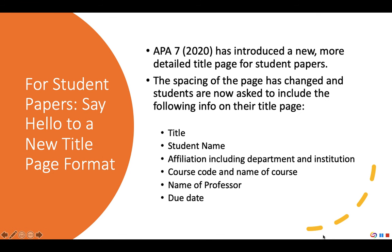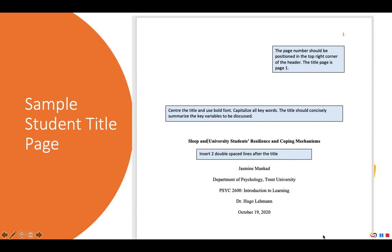APA 7 has also introduced a new, more detailed title page for student papers. The spacing of the title page has changed and students are now asked to include: the title of the paper, their name, their affiliation including department and institution, course code and name of course, name of professor, and due date.